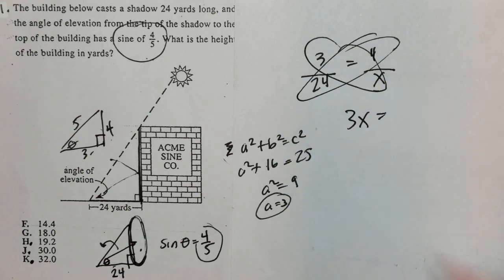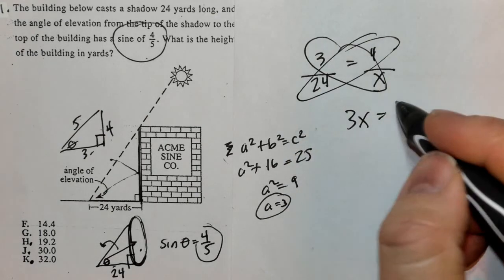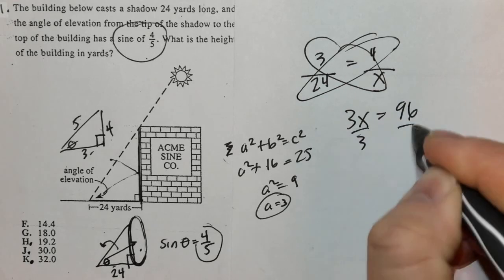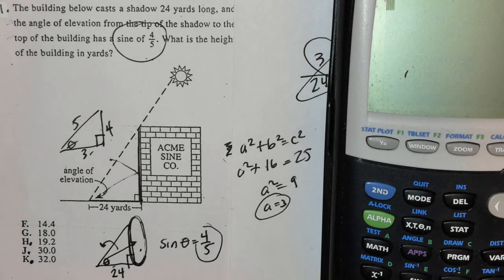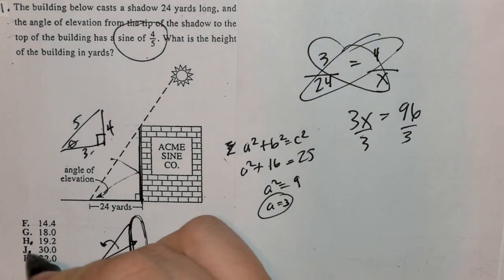3x equals, and 24 times 4 is 96. Divide by 3, divide by 3. 96 divided by 3 is 32, and the correct answer is K.